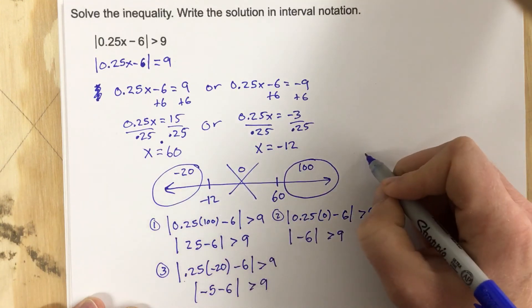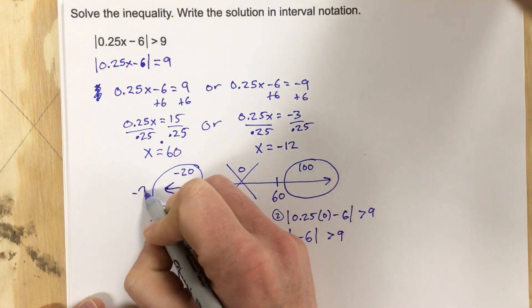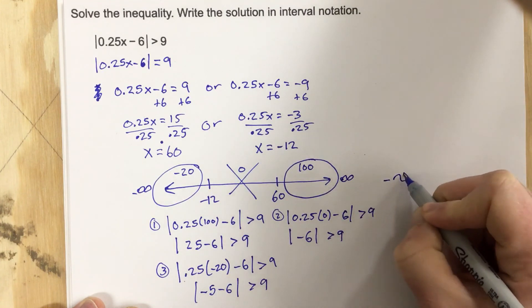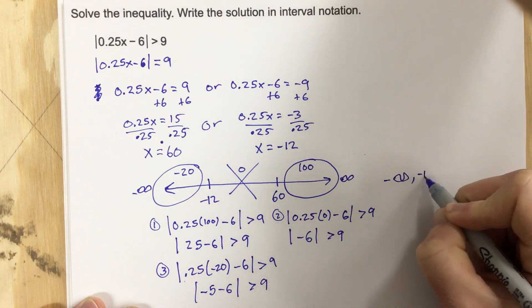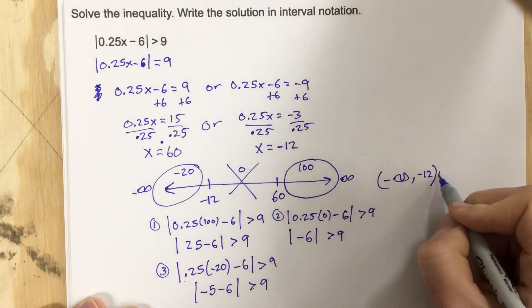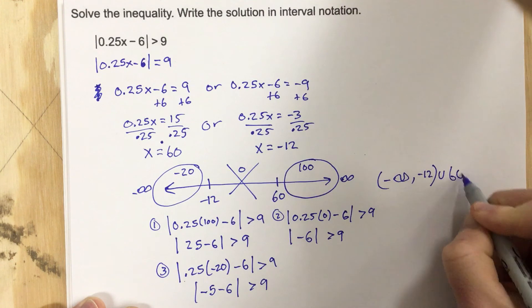So what does that mean? That means my solutions run from negative infinity to negative 12, but they don't include negative 12 because we have a greater than sign, union 60 to infinity.